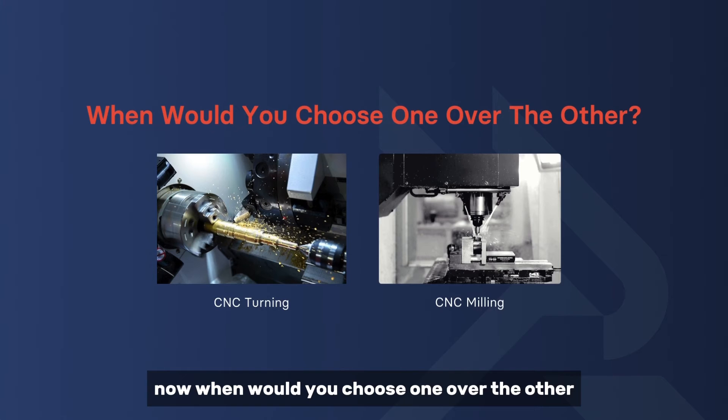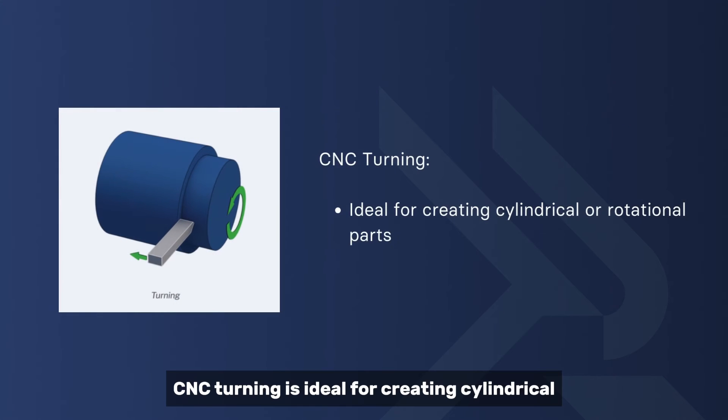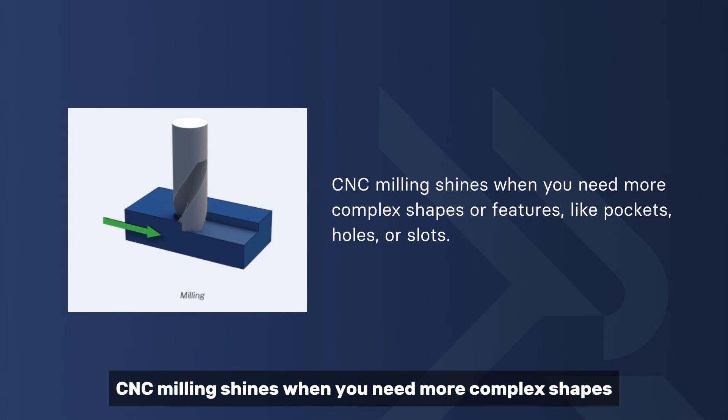When would you choose one over the other? Well, CNC turning is ideal for creating cylindrical or rotational parts. So if you need things like shafts, pins, or cylindrical molds, turning is your go-to. It's also great for symmetrical parts since the rotation ensures uniformity.